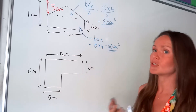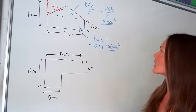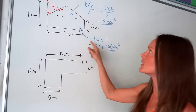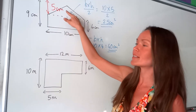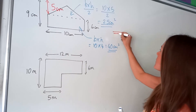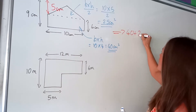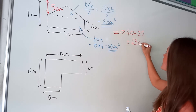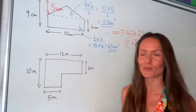So all that's left to do is to add those two answers together, because remember we're working out the area of this entire shape. So we have to add the rectangle to the triangle. The final step is just to add 40 and 25 together, which gives me 65 centimetres squared.